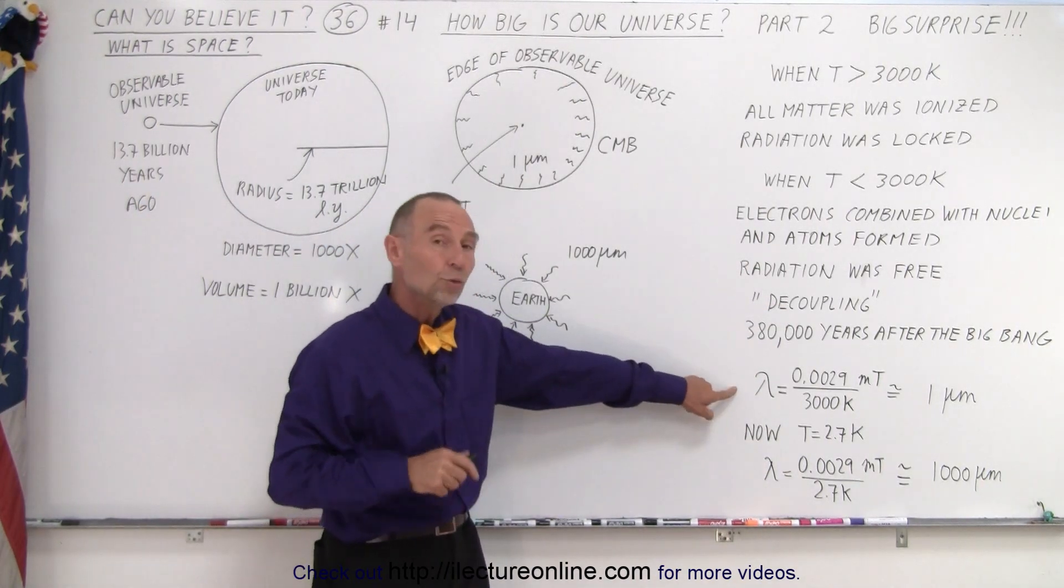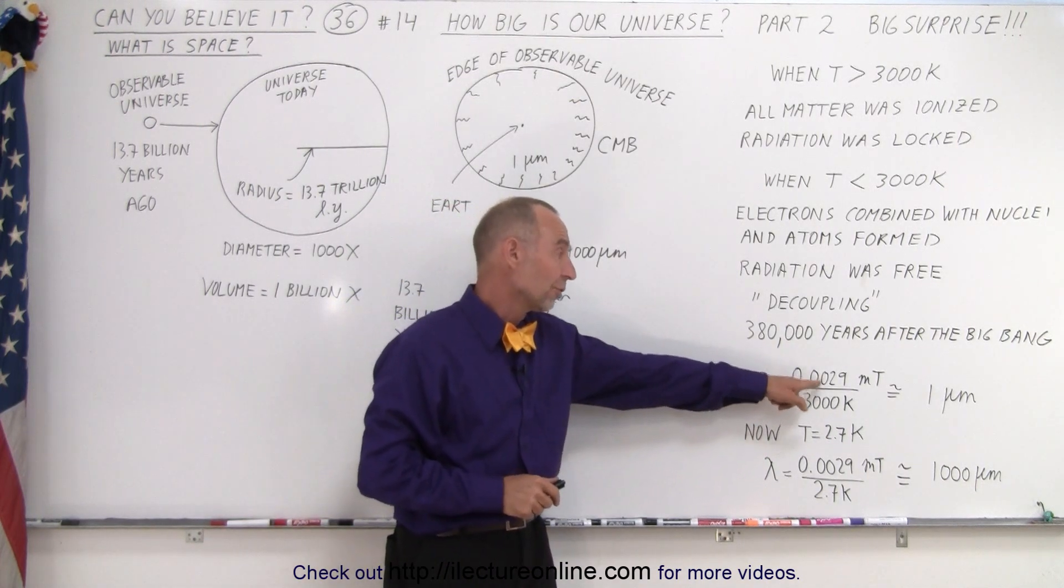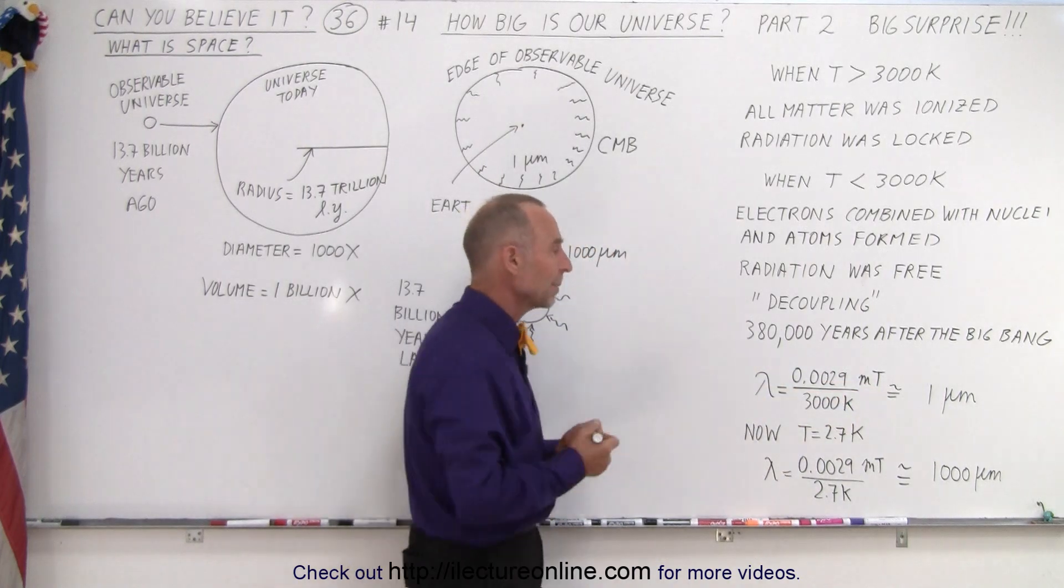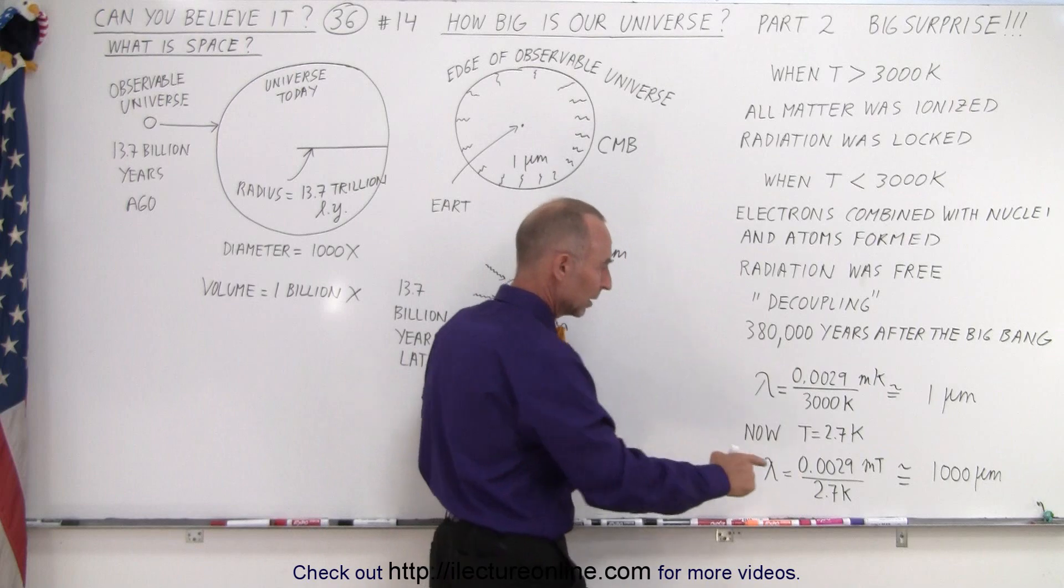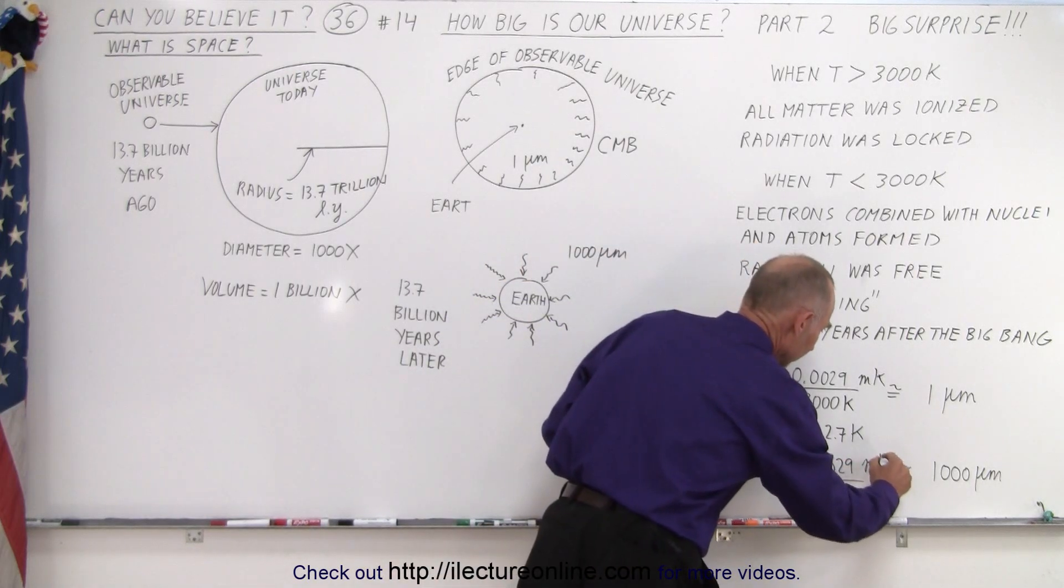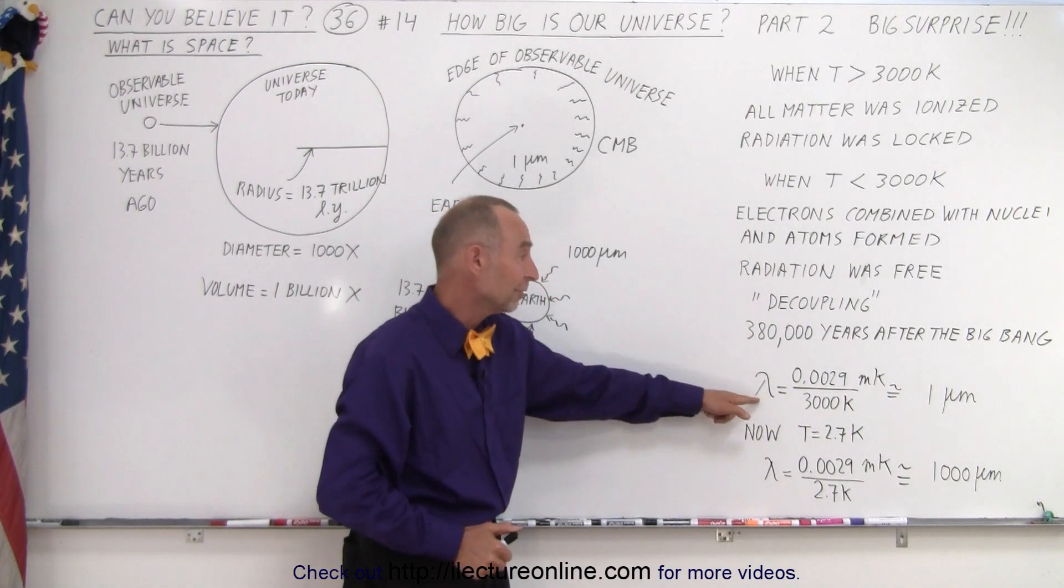Notice that when we use Wien's law that tells us that we take the number 0.0029 meter times temperature or maybe I should call it times Kelvin because that's the unit for temperature. And let's call that Kelvin as well. There we go. And we divide that by the temperature of the universe at the time, about 3000 Kelvin.